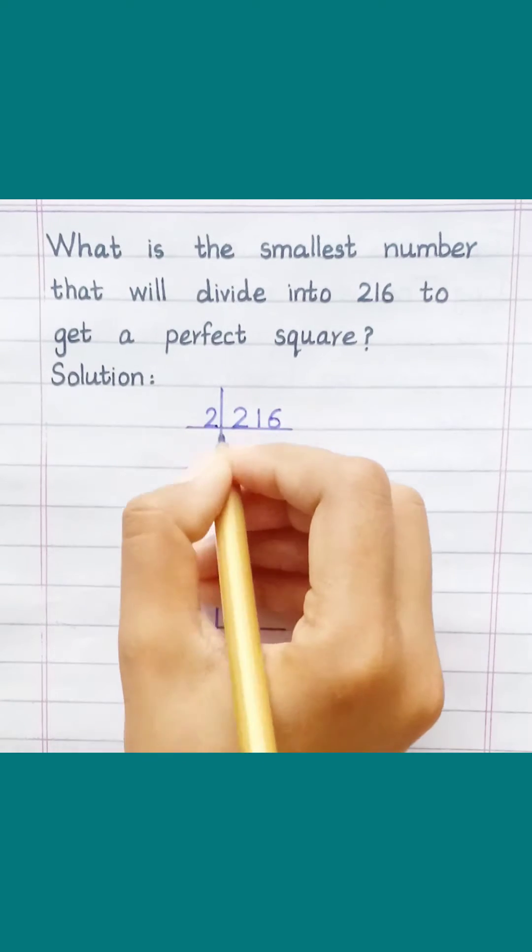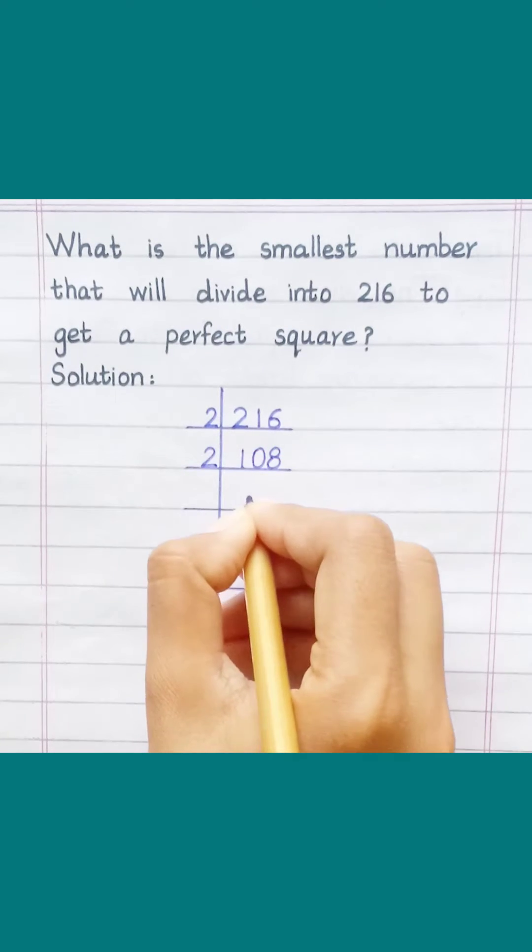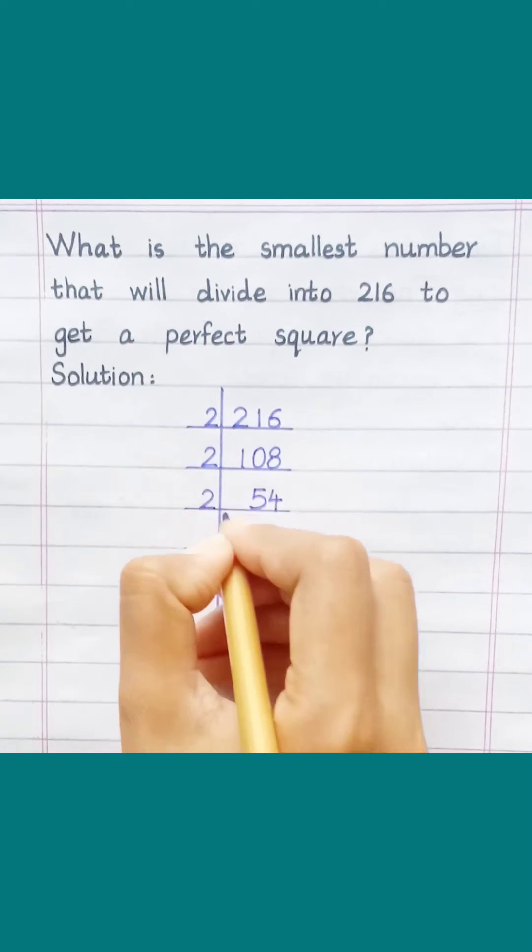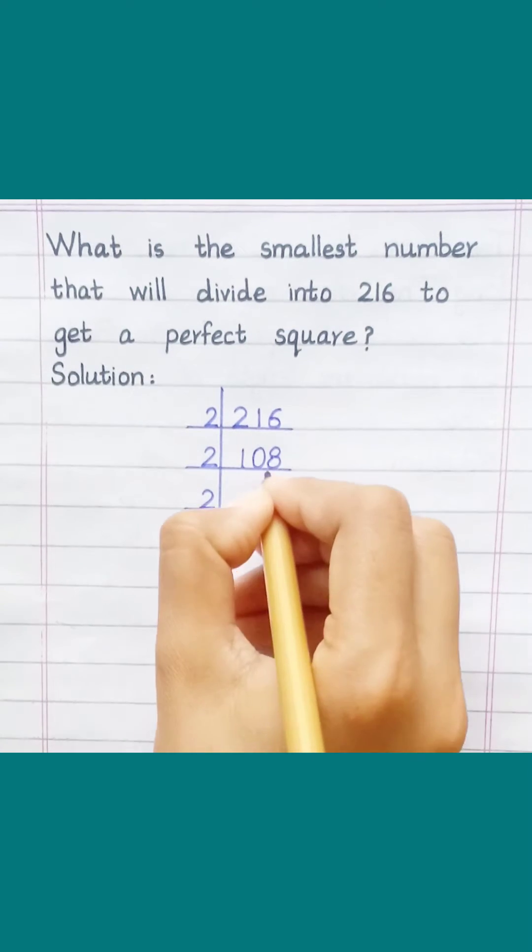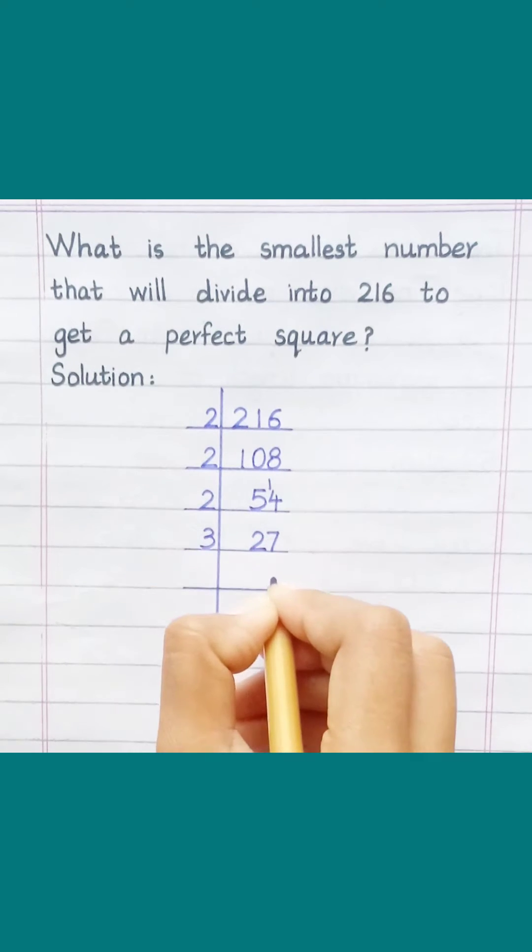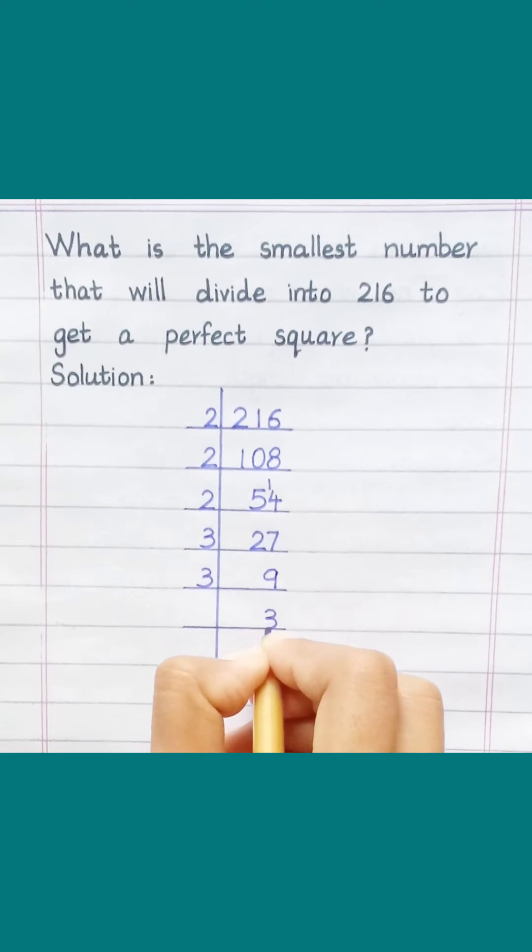Dividing by 2: 2 into 216 gives 108. 2 8's are 16. 2 5's are 10, 2 4's are 8, 2 2's are 4, 2 7's are 14. Then dividing by 3: 3 9's are 27, 3 3's are 9, 3 1's are 3.